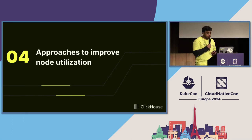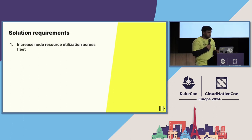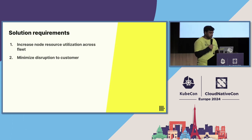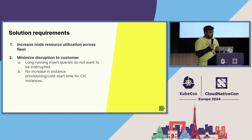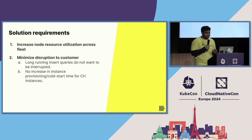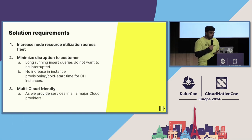Before exploring approaches, any solution we adopt needs to satisfy a few requirements. First, it needs to increase node resource utilization across the fleet. Second and most important, we want to minimize disruption to existing customers' workloads — since we're a database, we might have long-running insert queries on pods we don't want to interrupt. We also don't want degradation in experience when provisioning new instances. And our solution needs to be multi-cloud friendly — one solution that works for all three clouds, not a bespoke solution for each.